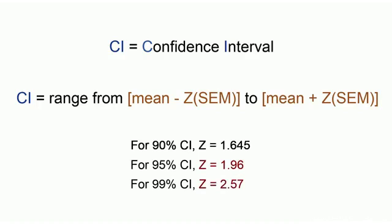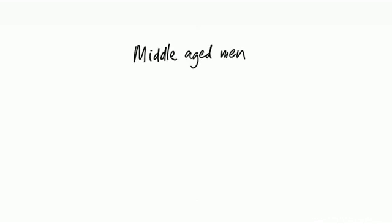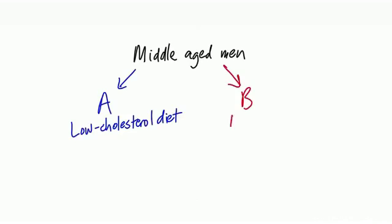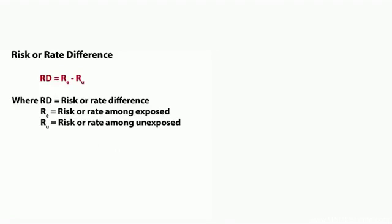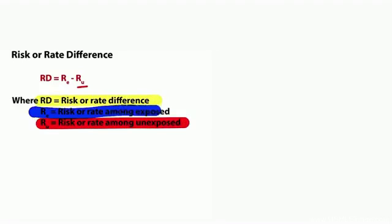Now let's look at confidence interval in an example. A study takes middle-aged men randomly assigned to group A — a strict low-cholesterol diet — or group B, the control. Group A has five cardiac events per 1,000 person-years; group B has seven. We can compare these rates using a rate or risk difference by subtracting the unexposed rate from the exposed rate: five minus seven equals negative two. The negative result shows exposure to the new diet decreased cardiac events, demonstrating a favorable impact.